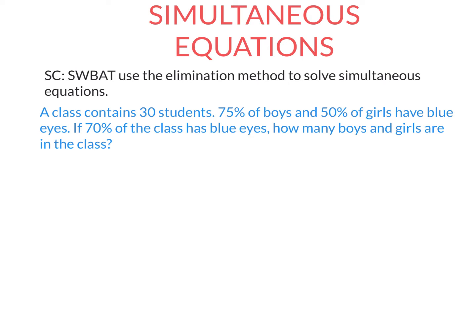Simultaneous means at the same time. The magic number here is two. We're going to solve two equations at the same time. We have two bits of information from which we get two equations and solve for two variables.